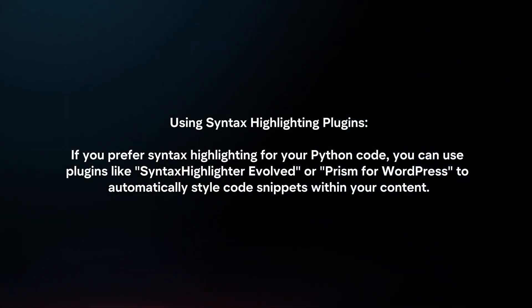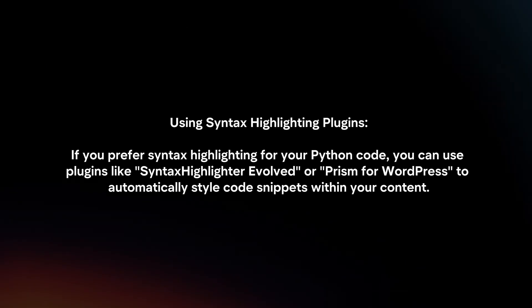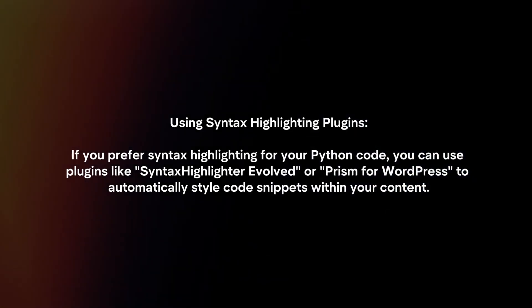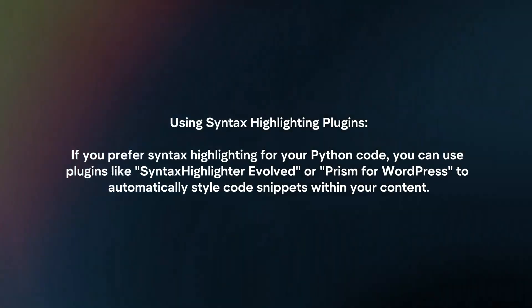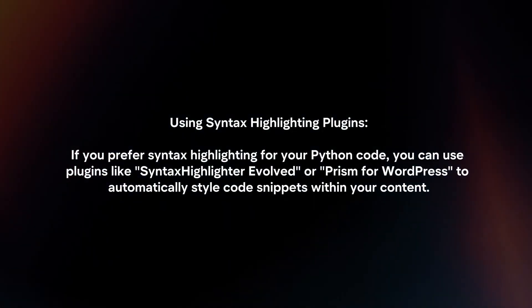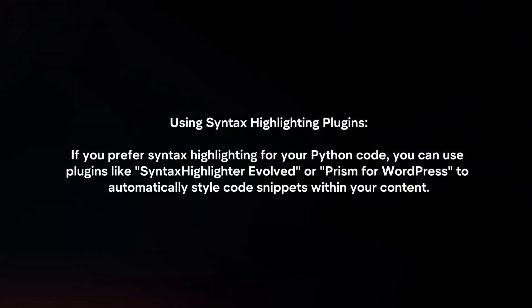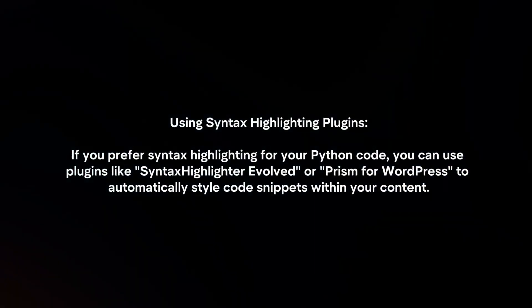If you prefer syntax highlighting for your Python code, you can use plugins like Syntax Highlighter Evolved or WP-Syntax from WordPress to automatically style code snippets within your content.